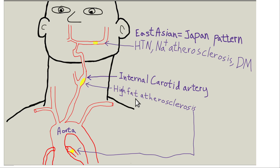Let's talk about the two major patterns of atherosclerosis. There's typical Western atherosclerosis from eating a high-fat diet - you get a lot of atherosclerosis at the internal carotid artery origin, where the common carotid bifurcates into external and internal carotid. Most people I look at on CT angiograms of the brain will have some atherosclerosis right there, especially the older and sicker ones. The coronary arteries are also heavily calcified with lots of plaques in these areas. This is your high-fat diet westerner.